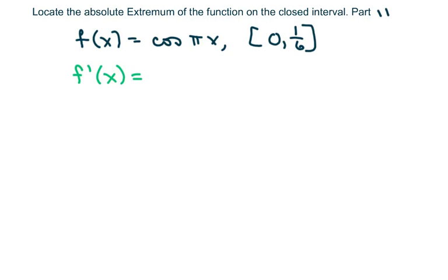So the derivative of cosine is negative sine, then you multiply it by the derivative of your inner function, which is just going to be π.